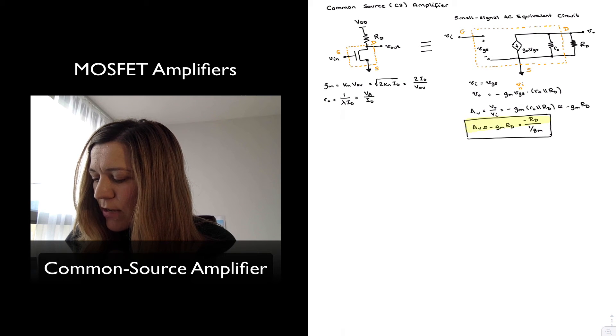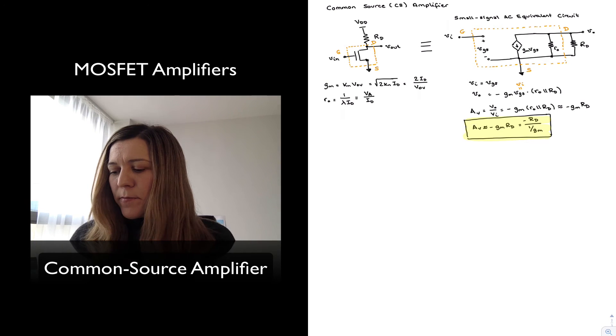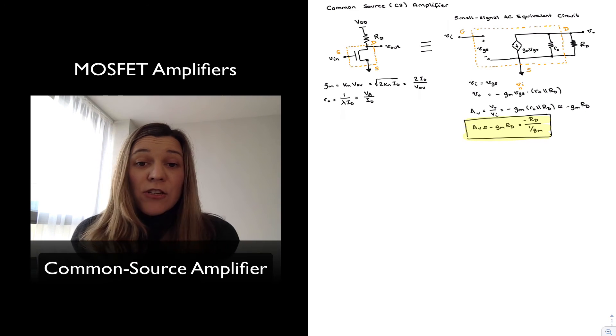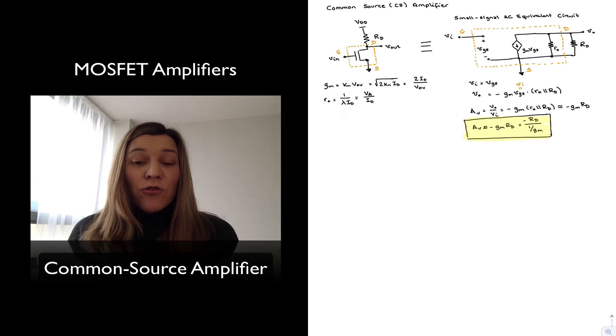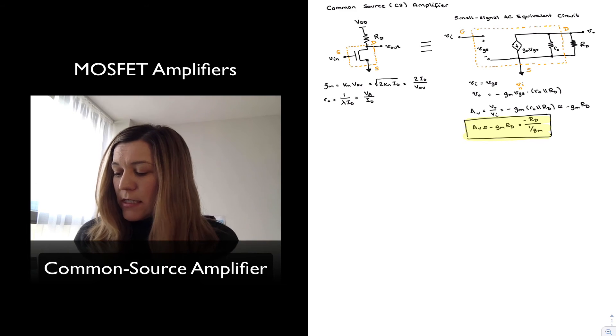But that's it. That's the voltage gain for the common source amplifier. Notice that this is essentially the transconductance times the output resistance RD. And it's negative because it's an inverting amplifier.